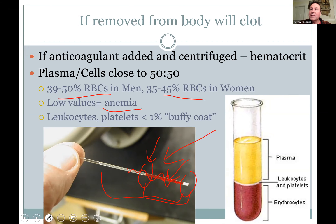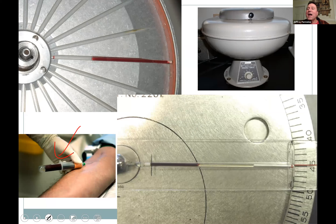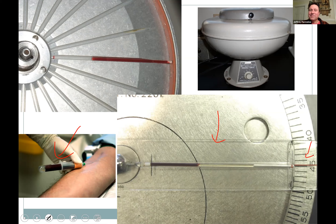If your hematocrit is low you're anemic. If you lose red blood cells you become anemic — you become pale and tired because you need them to carry oxygen. The tube used for hematocrit is lined with an anticoagulant — actually heparin — so the blood doesn't clot. You can spin it and read the hematocrit. Now they have digital machines, but the old-fashioned way lets you read it directly — a value of 45 for example.